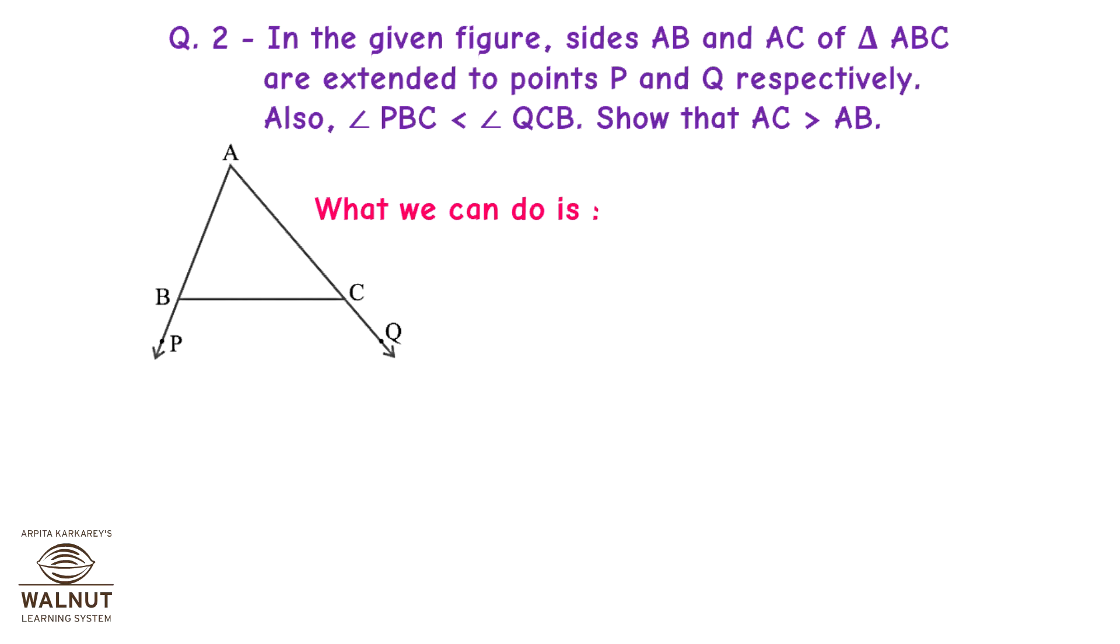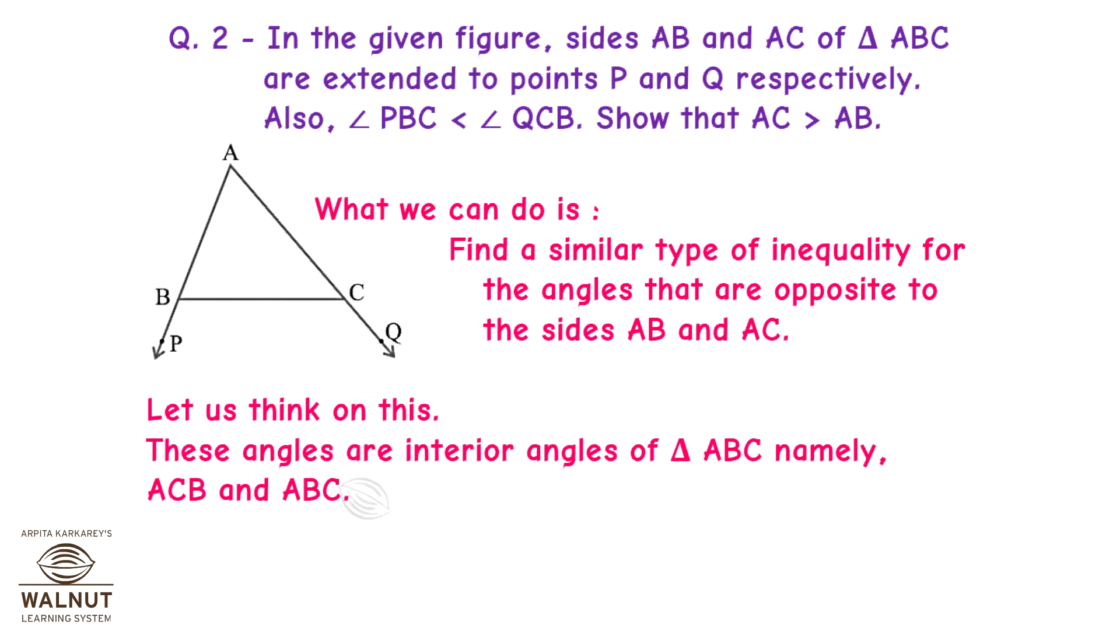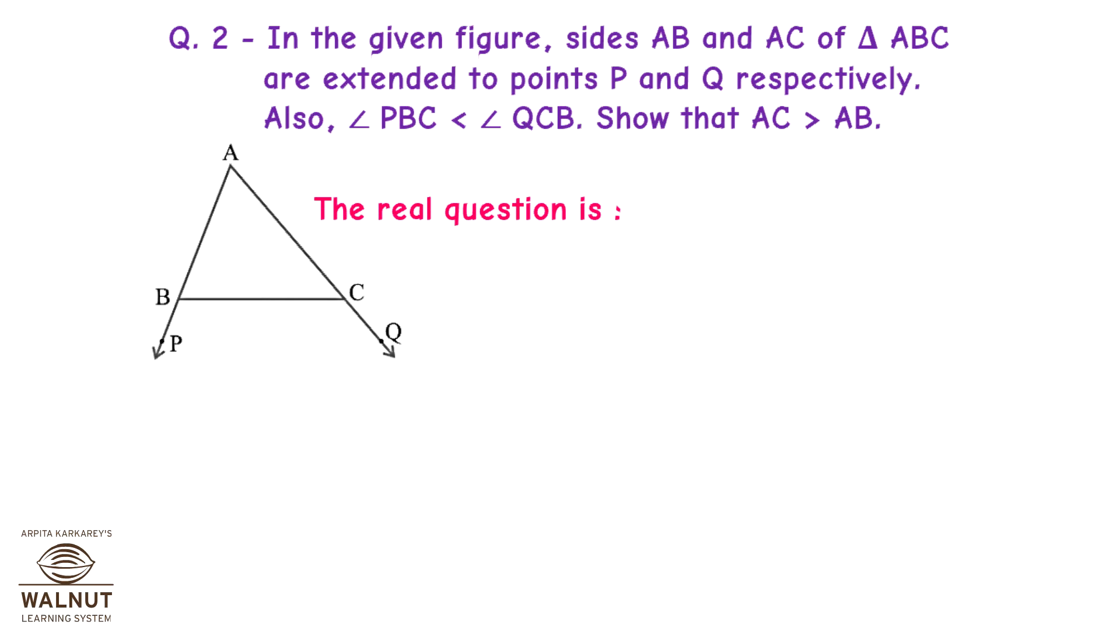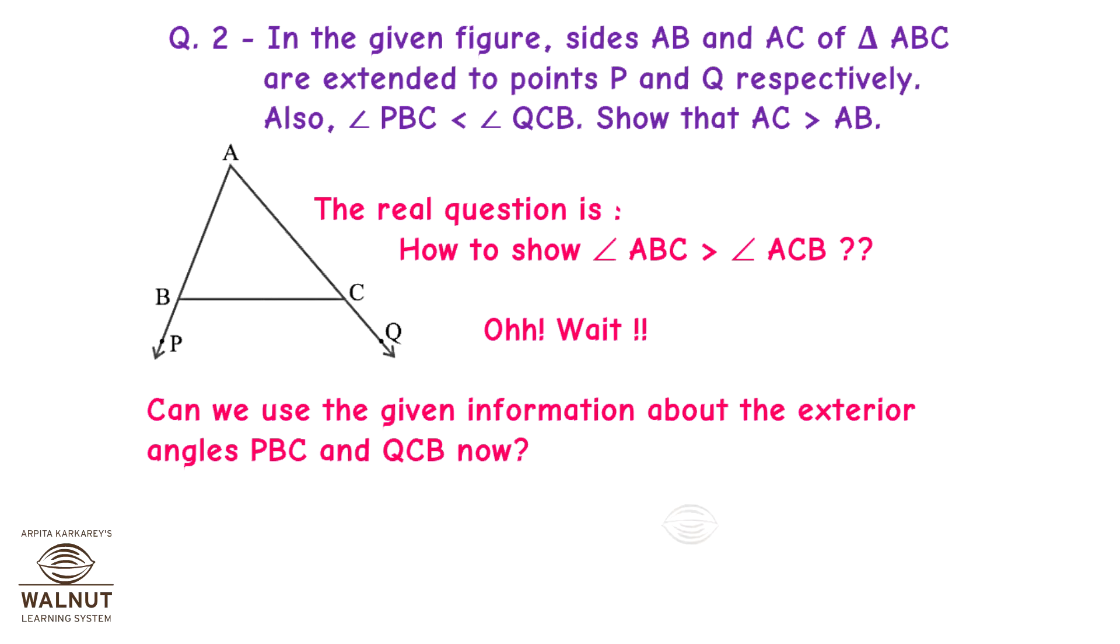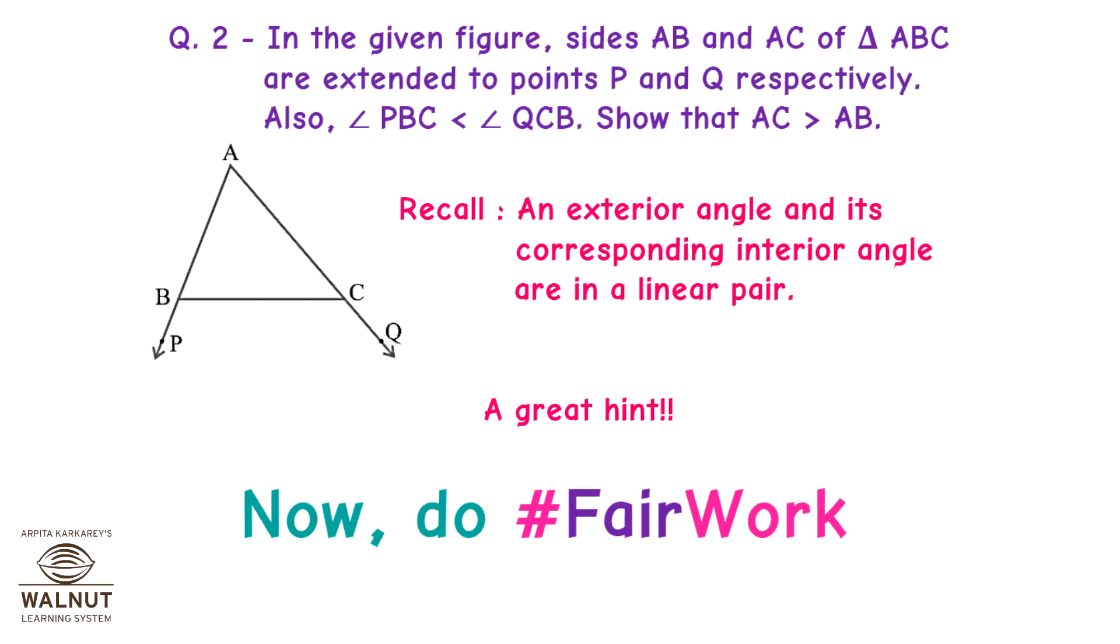What we can do is find a similar type of inequality for the angles that are opposite to the sides AB and AC. These angles are interior angles of triangle ABC, namely ACB and ABC. If we are able to prove that angle ABC is greater than angle ACB, then we are done. The real question is how to show angle ABC is greater than angle ACB? Can we use the given information about the exterior angles PBC and QCB now? Hopefully, yes! Recall: An exterior angle and its corresponding interior angle are in a linear pair. A great hint! Now, do fair work!